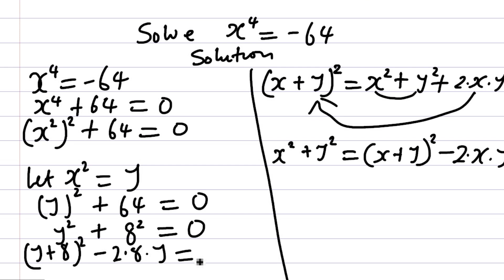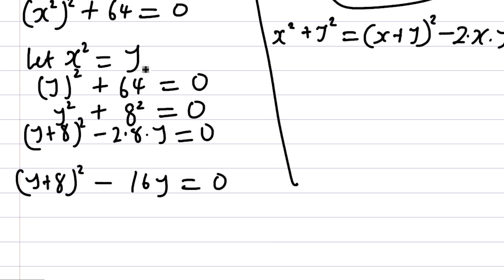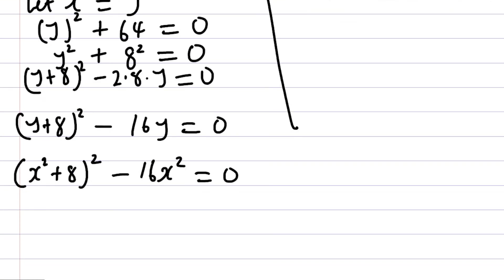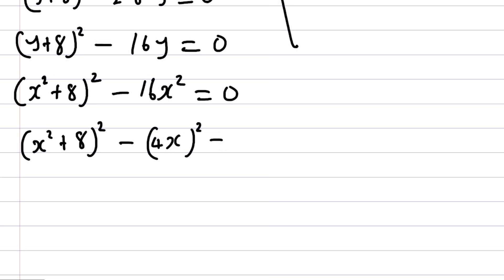Applying the same thing here: Y squared plus 8 squared is the same as (Y + 8) all squared minus 2 times 8 times Y, equals zero. This gives us (Y + 8) all squared minus 16Y equals zero. Now let us replace Y back — remember Y equals X squared — so this becomes (X squared + 8) all squared minus 16X squared equals zero.